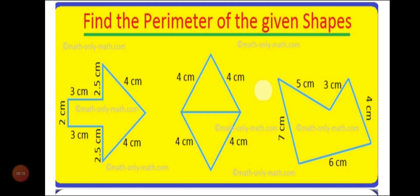Now the activity for you is to find the perimeter of the given shapes. You have to do this activity in your practical notebook. Make all three figures using the same lengths as given in the picture, then find out the perimeter of all three shapes. This is your today's homework — try to find the perimeter yourself and send it to me for correction.